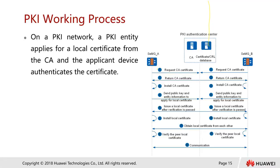Let's look at the PKI working process. We have two components here — two firewalls — and we have the PKI authentication center, which includes the CA (Certificate Authority) and the database. These can be two different components or within the same component, CA with the database together.